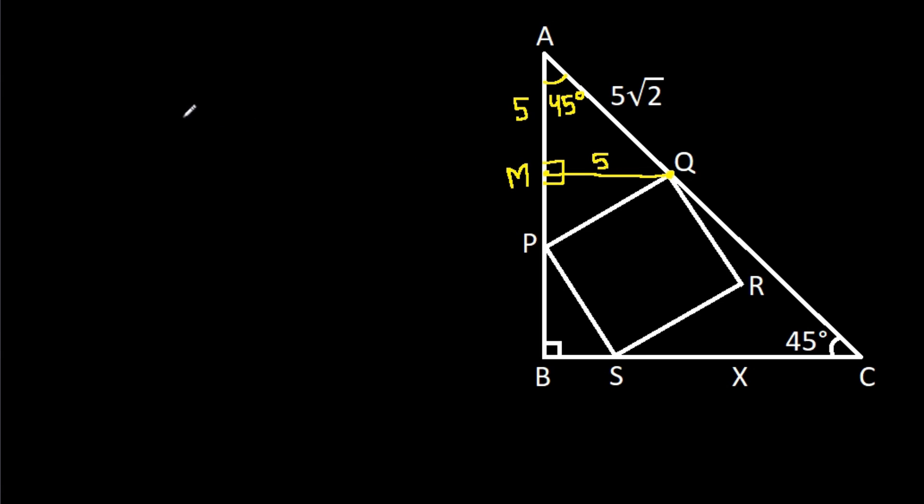Now we know that PQRS is a square. That means PQ will be equal to PS, and also angle Q will be 90 degrees.